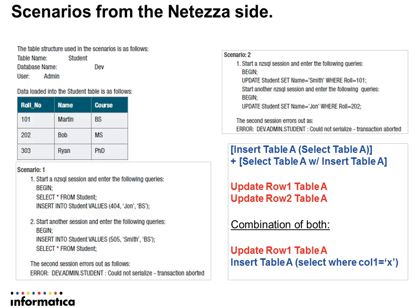One of the ideas about the serializable isolation level is that you should be able to run transaction one and transaction two in any order and still get the same result. You can see here that I'm selecting three records in the first connection, and then in the second one, I'm inserting and then selecting. If I had run these separately, I would get different results — so that's the reason we're getting this 'could not serialize, transaction aborted' error.